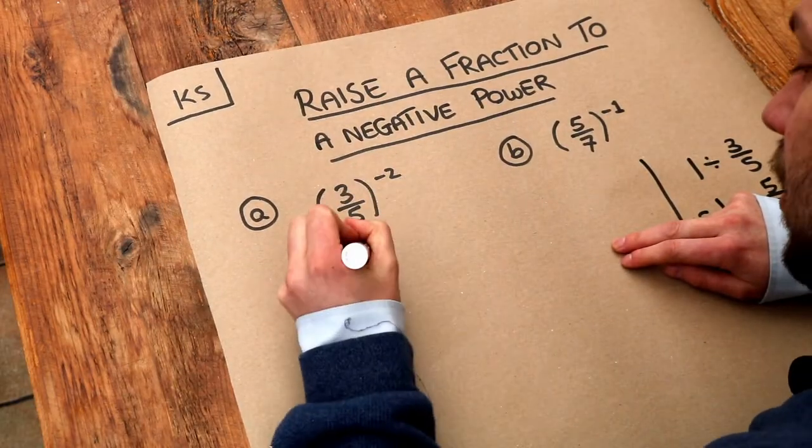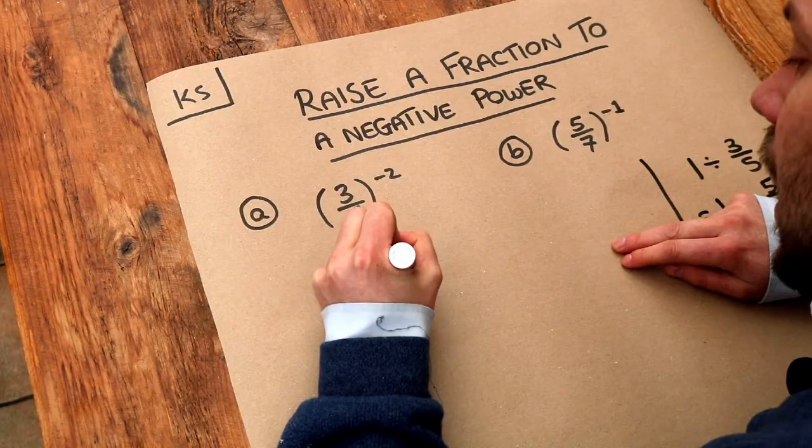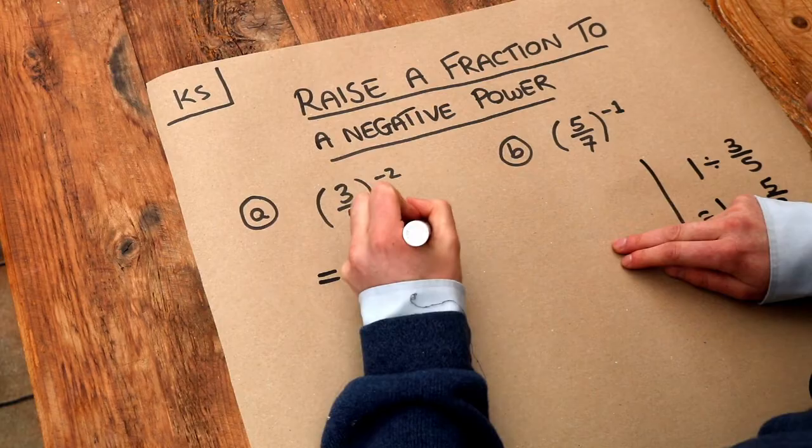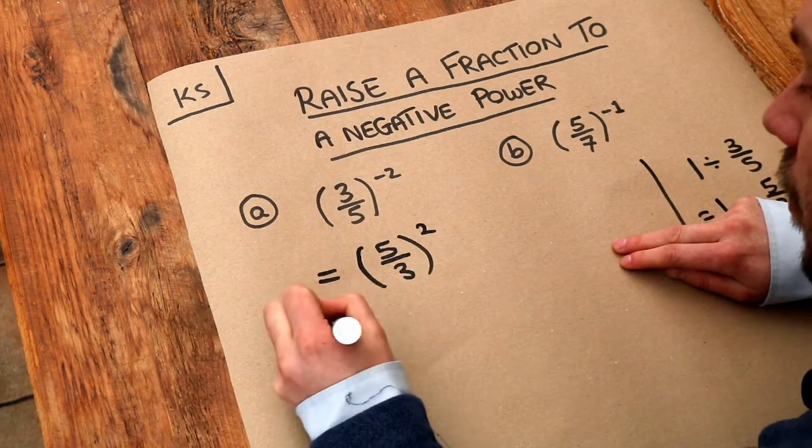So this 3 fifths is going to become 5 over 3. And now we've dealt with that negative power. So we've still got the 2 there, but we've got rid of that minus. So we've now got 5 over 3 squared.